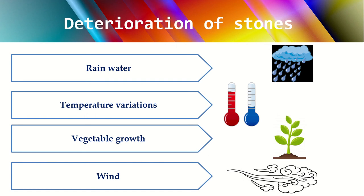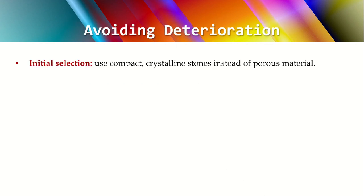Now, how should one avoid deterioration? The first point is initial selection. Initially, select stones that are compact, hard in nature, and crystalline — and take care that they are not porous.